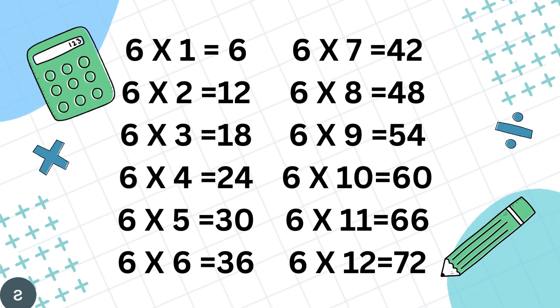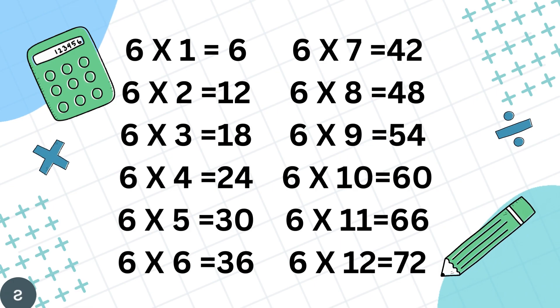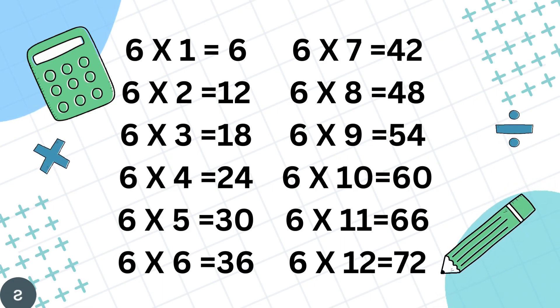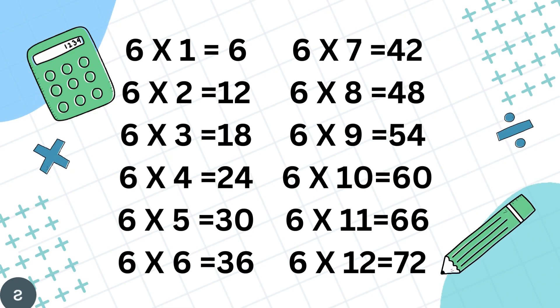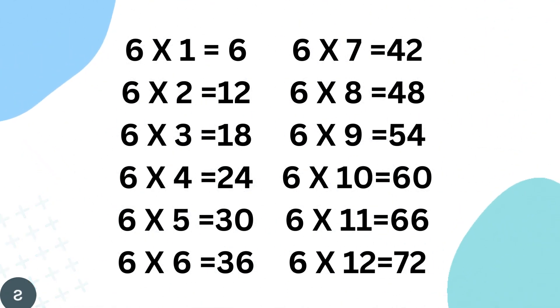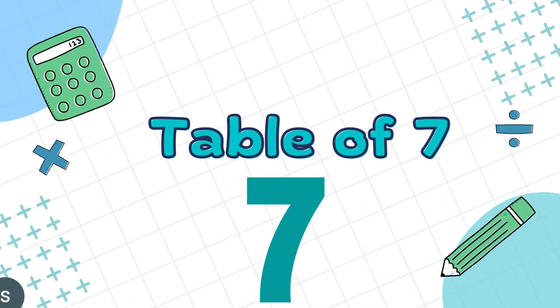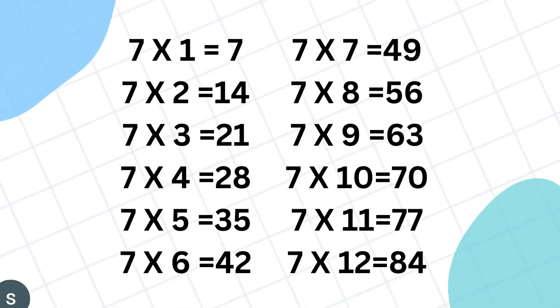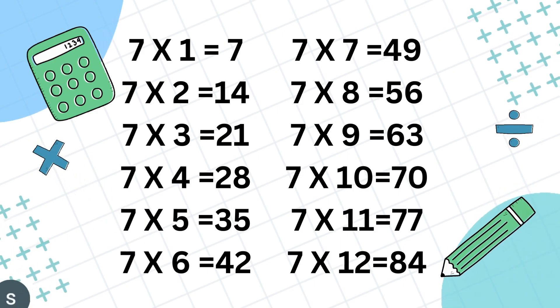6 8's are 48, 6 9's are 54, 6 10's are 60, 6 11's are 66, 6 12's are 72.